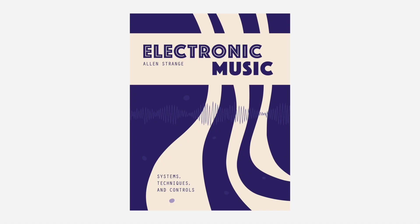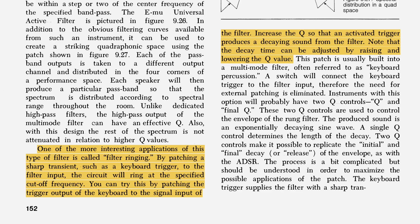But now let's move on to the second technique. For the second ping meaning, we need resonant filters and no sound at all. This technique is also called pinging very often, but another term is ringing, which we can find in Alan Strange's 'Electronic Music' at page 152. One of the more interesting applications of a resonant filter is called filter ringing. By patching a sharp transient, such as a keyboard trigger, to the filter input, the circuit will ring at the specified cutoff frequency. You can try this by patching the trigger output of the keyboard to the signal input of the filter. Increase the Q so that an activated trigger produces a decay sound from the filter. Note that the decay time can be adjusted by raising and lowering the Q value. With this technique, therefore, we are not modulating the cutoff frequency as before and we are not using the filter to process an external signal either.